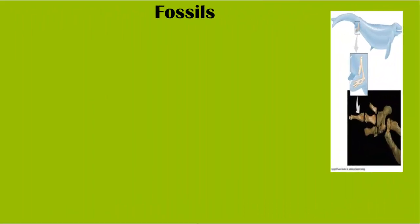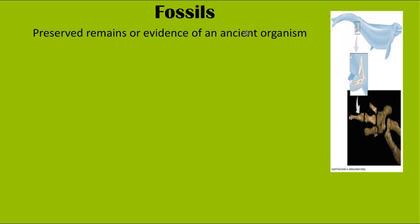Let's start by looking at fossils and how this is evidence for the theory of evolution. A fossil is any preserved remains or evidence of an ancient organism. It could range from bones left after the organism died, buried amongst layers of sand, silt, rock, or volcanic magma. Maybe it is a footprint that was covered and fossilized, or artifacts — remains of evidence that an organism did exist.